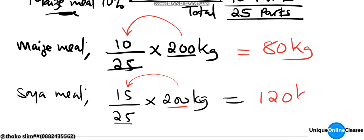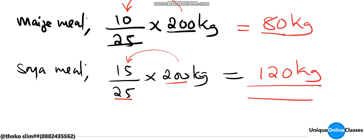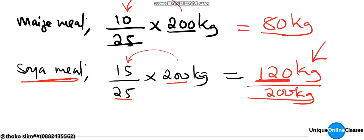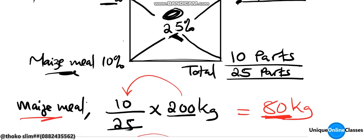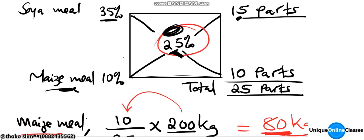If we add 80 and 120 that gives us 200 kg — which means we need to collect 120 kg of soya meal and 80 kg of bean meal, so that when combined they give us 200 kg total, and the feed will contain 25% crude protein. This is how we construct our Pearson Square.